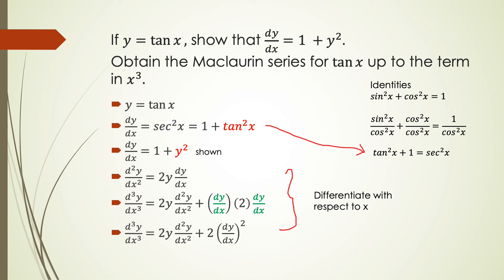Then we continue to get the third derivative. Differentiating the second derivative gives the third derivative. On the right side we apply the product rule to solve, with u equal to 2y and v equal to dy/dx. So we get 2y times d²y/dx² plus 2 times (dy/dx)². After simplifying, the third derivative equals 2y times d²y/dx² plus 2(dy/dx)².